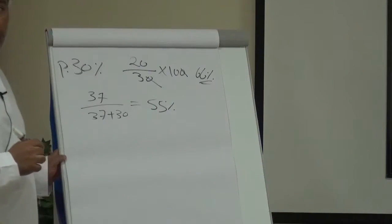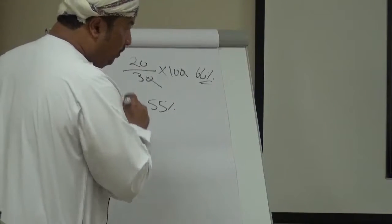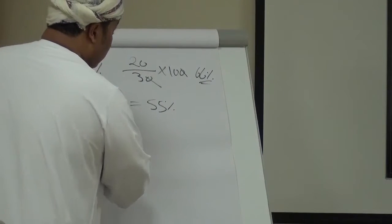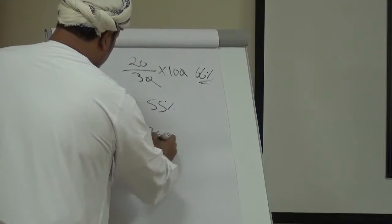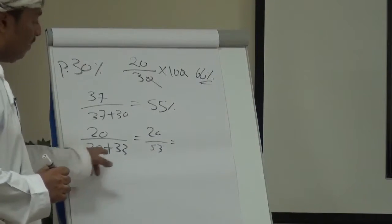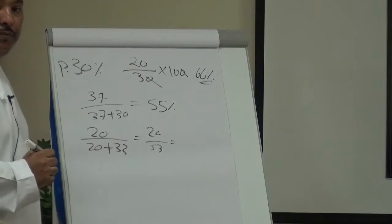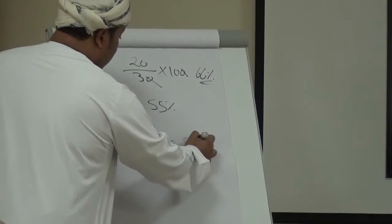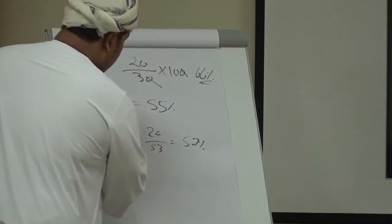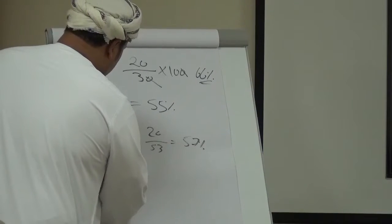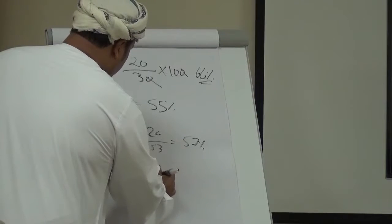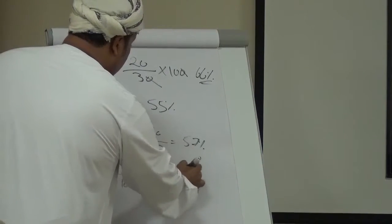Negative predictive value: true negatives (37) over true negatives (37) plus false negatives (10) = 37 over 47, giving approximately 78-80%.